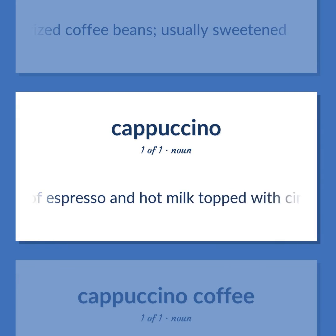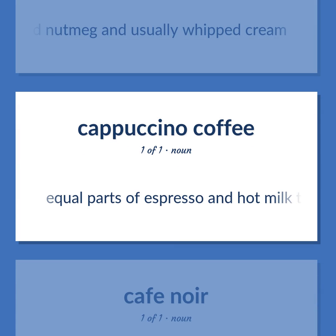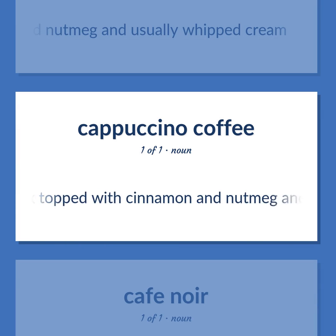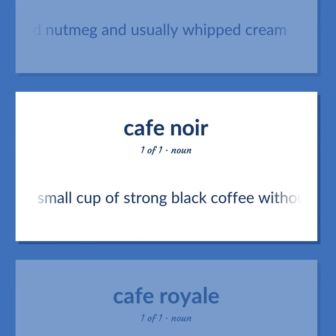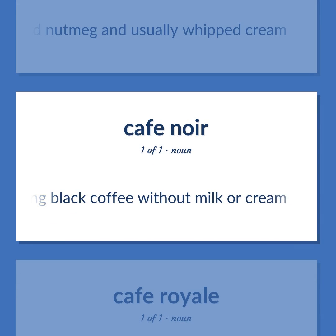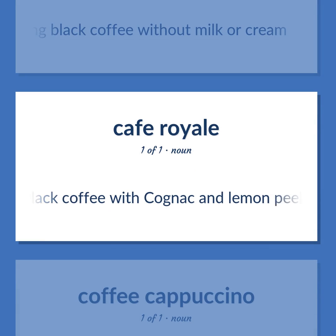Cappuccino: equal parts of espresso and hot milk topped with cinnamon and nutmeg and usually whipped cream. Demitasse: a small cup of strong black coffee without milk or cream. Café royale: black coffee with cognac and lemon peel and sugar.